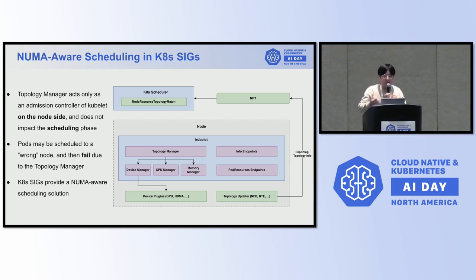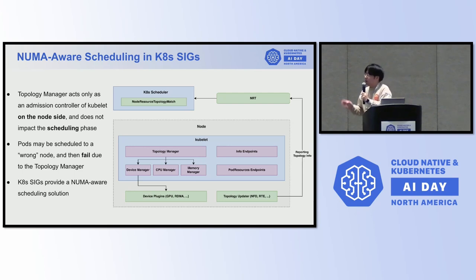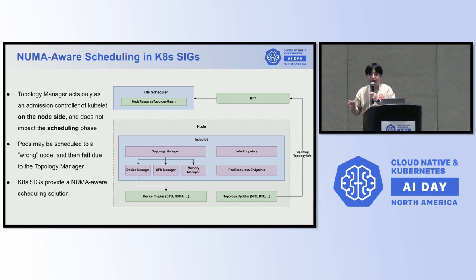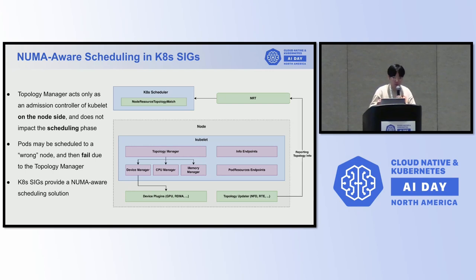However, the topology manager also has certain limitations. The topology manager acts as an admission controller on the node side. It is a module of kubelet and it doesn't impact the scheduling phase. That is to say, pods may be scheduled to a wrong node that cannot meet the resource requirements at the NUMA node level, and then the pods will fail.